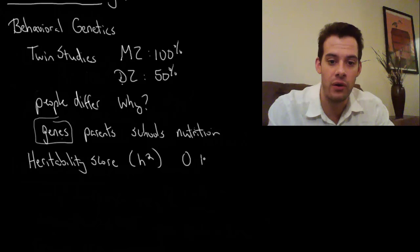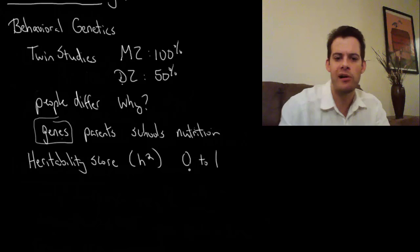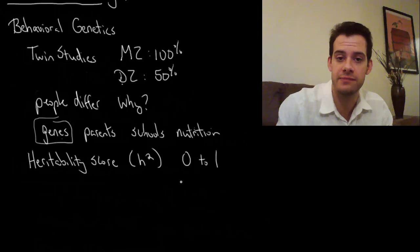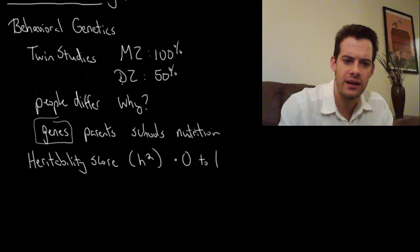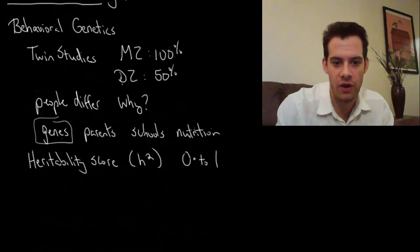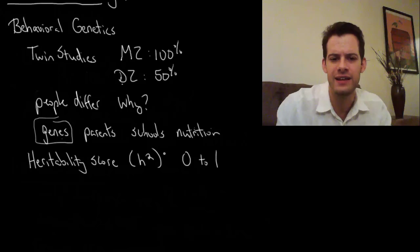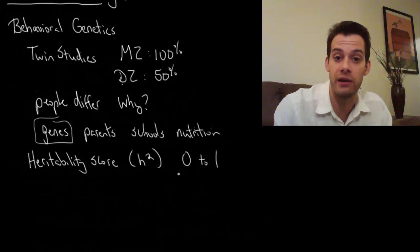Well heritability score can range from 0 to 1. When a heritability score is 0, that says genes have no effect on the difference. In other words it says people differ, people have different IQs let's say, but genes don't matter. That would be if heritability was 0. Genes don't play any role in explaining why this person scores 110 and this person scores 80 and this person scores 125. Zero would mean genes don't play a role.